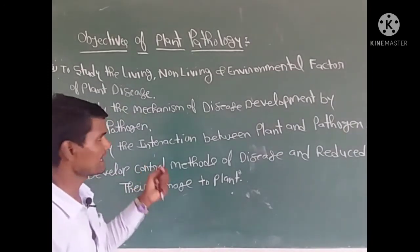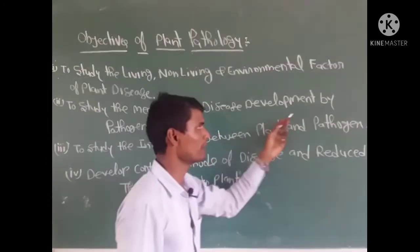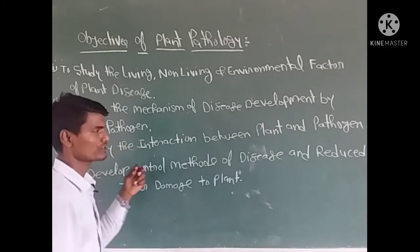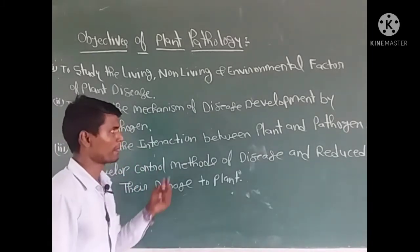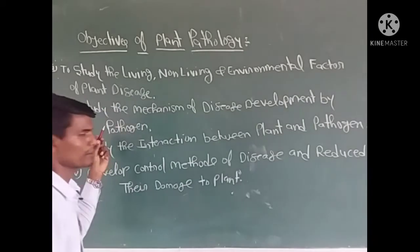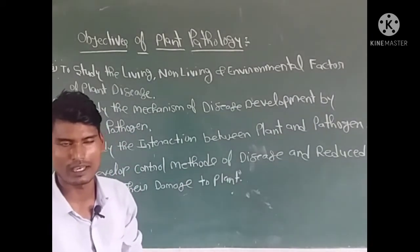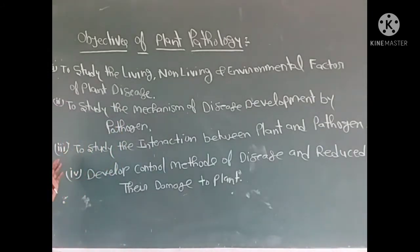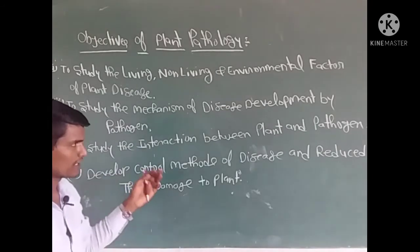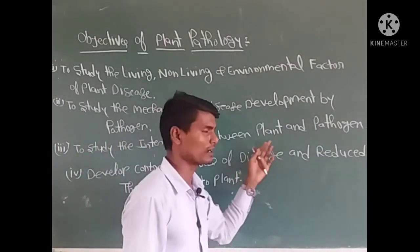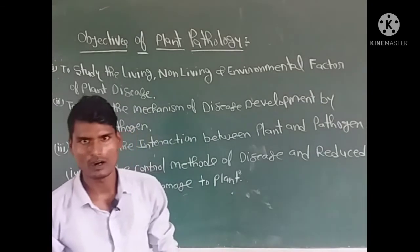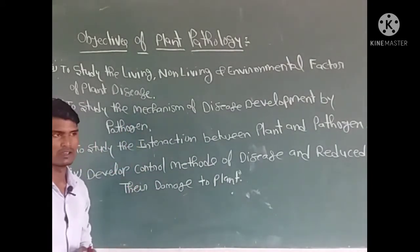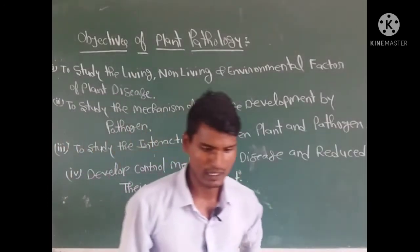अगला objective है: to study the mechanism of disease development by pathogen. Pathogen — हिंदी में रोगजनक कहते हैं। रोगजनकों के द्वारा पौधों में किस प्रकार disease development होती है, उनकी क्या क्रियाविधि है, उसके बारे में अध्ययन करना plant pathology के अंतर्गत है।